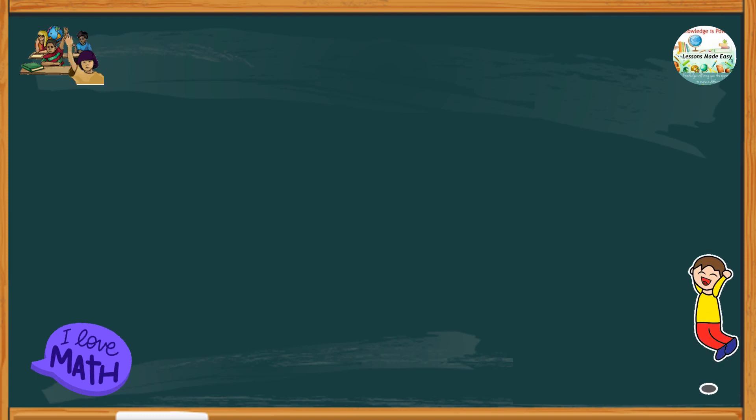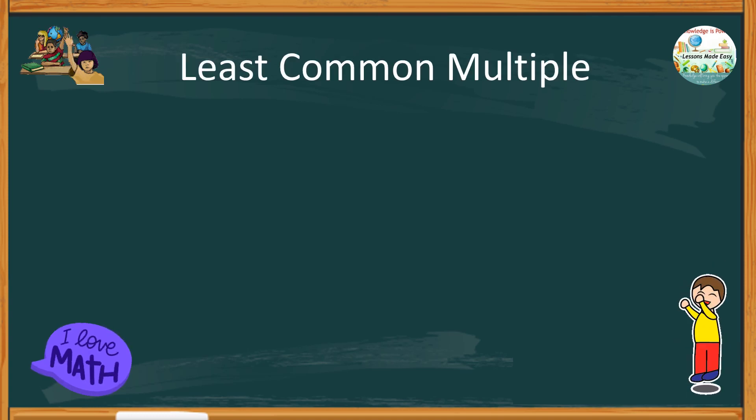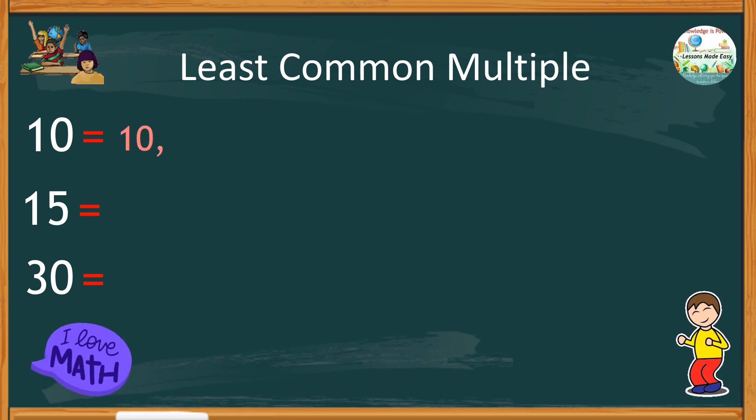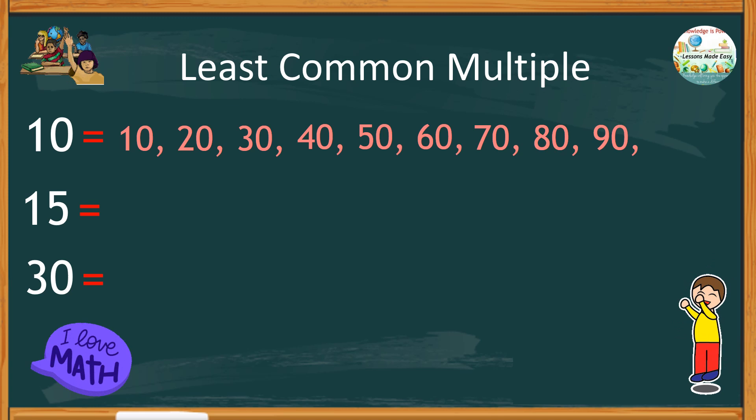Let's try another example using three numbers. Find the least common multiple of ten, fifteen, and thirty. So, we have to list down the multiples of each number one at a time. The multiples of ten, we have ten, twenty, thirty, forty, fifty, sixty, seventy, eighty, ninety, one hundred, and so on. We can stop at a hundred because we don't really need a large number. We are looking for the smallest common multiple.